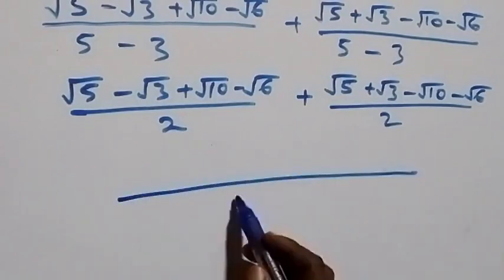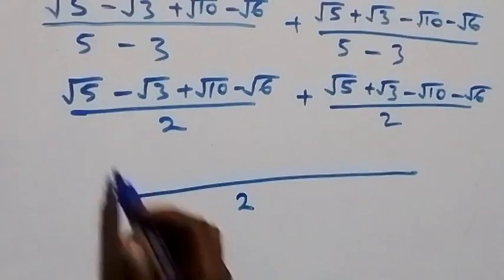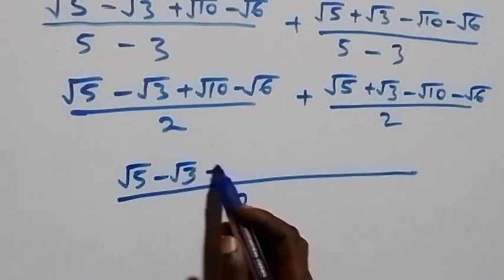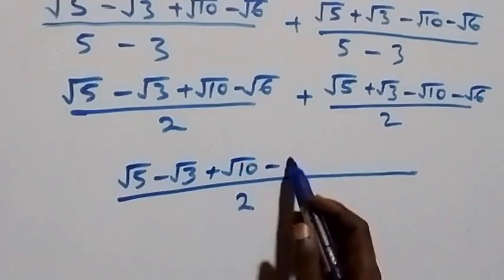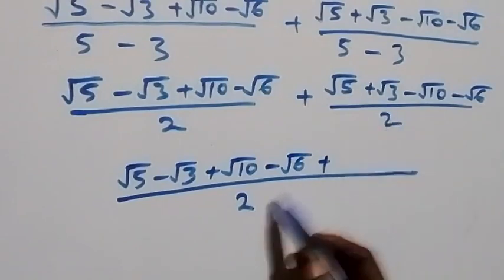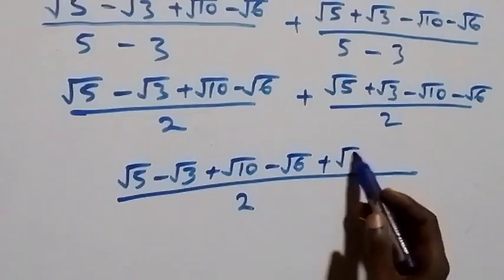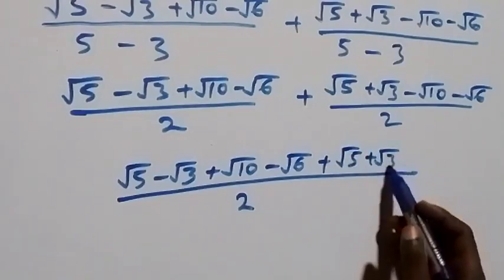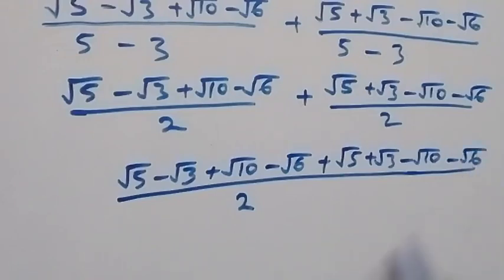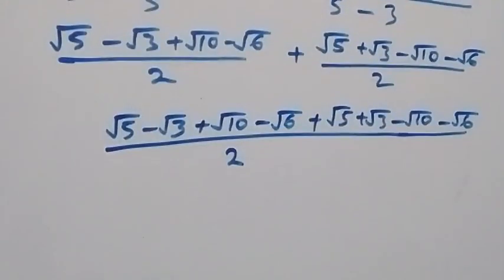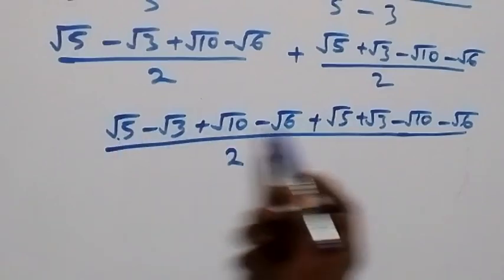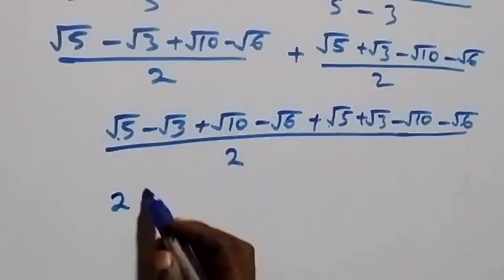Bringing them together over the common denominator 2, the combined numerator is: √5 + √5, −√3 + √3, +√10 − √10, and −√6 − √6. We now add the like terms.